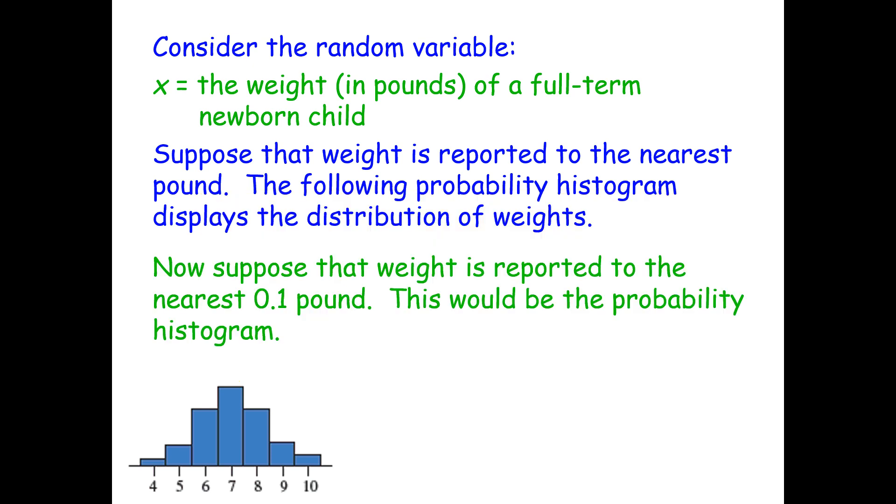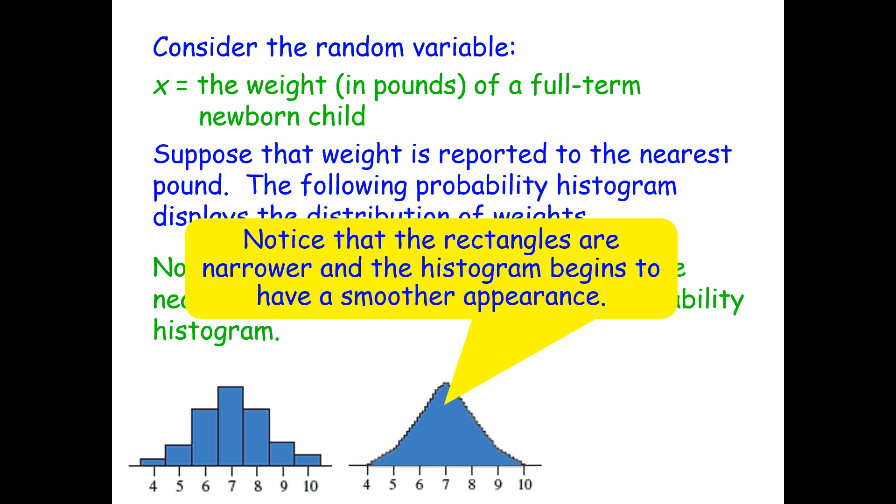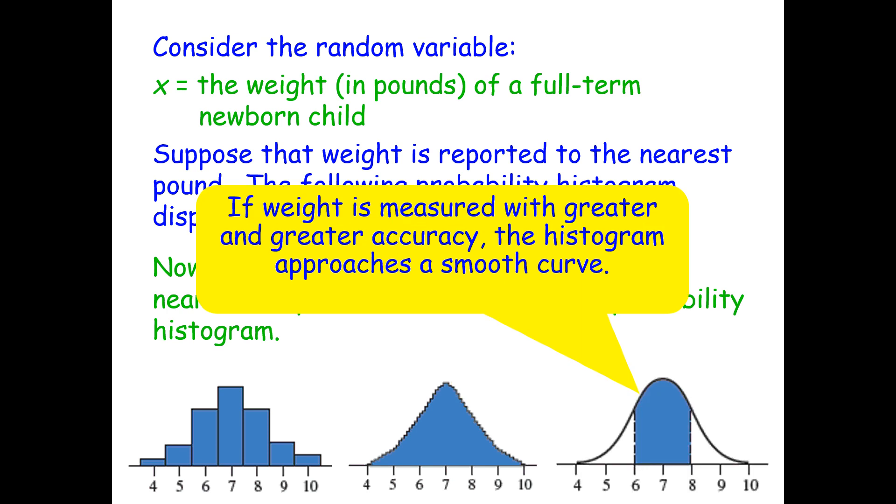So now suppose that the weight is reported to the nearest 0.1 pound. Notice that the rectangles are narrower and the histogram begins to have a smoother appearance. Now if the weight is measured with greater and greater accuracy, the histogram approaches a smooth curve.